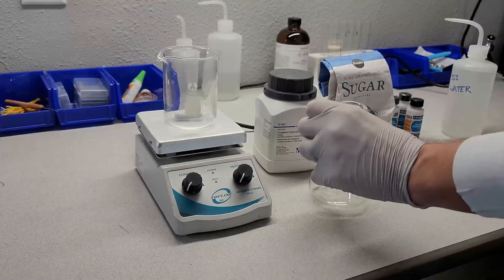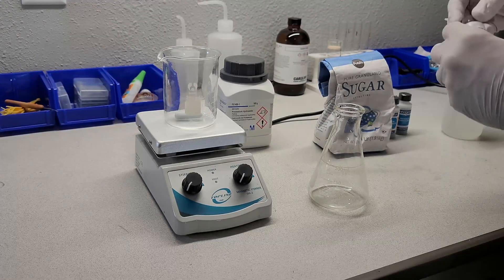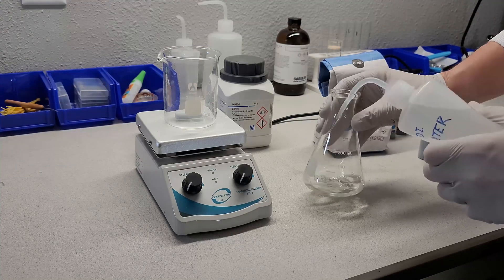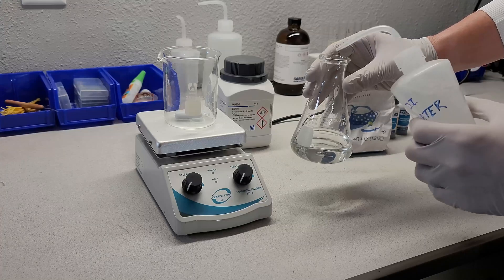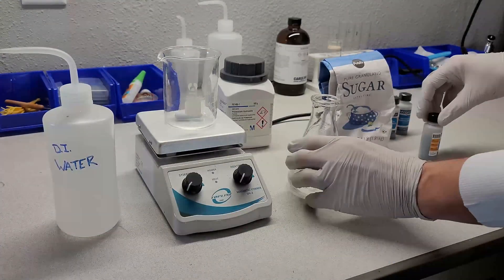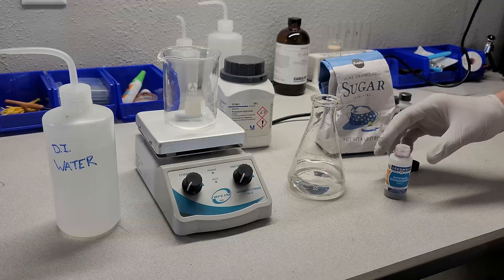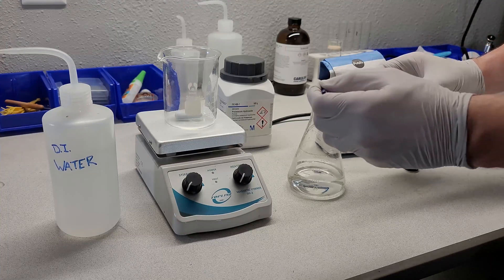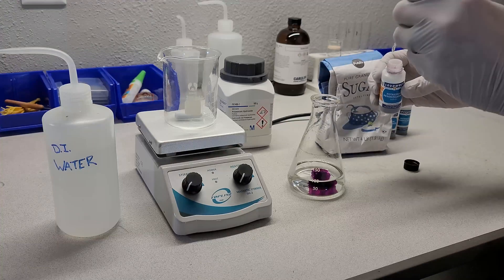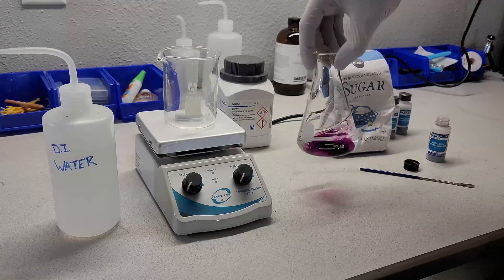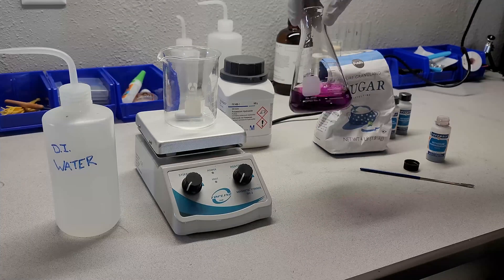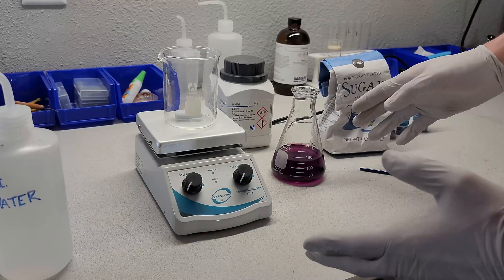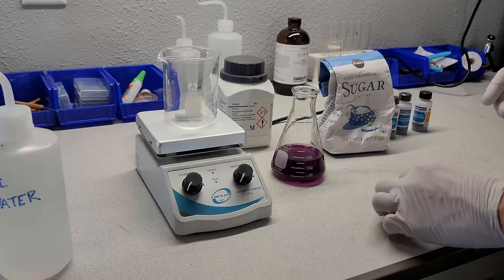So to start things off, I'll take my little Erlenmeyer flask here, and to that we'll add about a hundred mils of water. Then we're going to take a little bit of our potassium permanganate. We don't need much. Just enough to make everything turn a nice pretty purple. Purplish pink. If you do too much, the colors will be too dark to see, and you don't really necessarily want that.